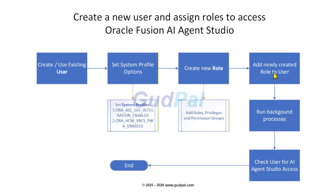Once that's done, you assign the newly created role to the user, then run the background processes so the LDAP server can sync to the Fusion server. After that, you go to the front end and check for AI Agent Studio access. I'm going to start by creating a new user.